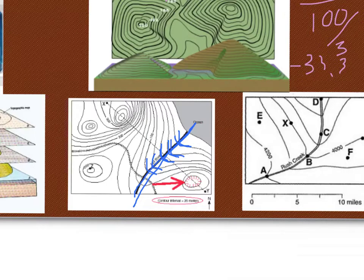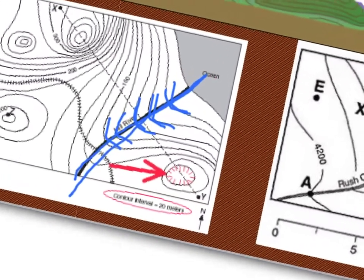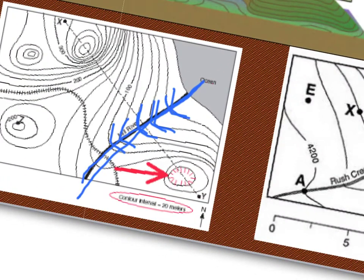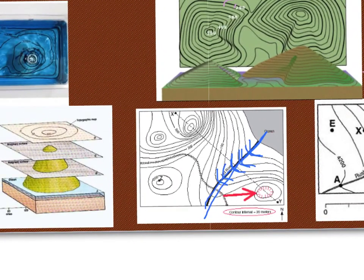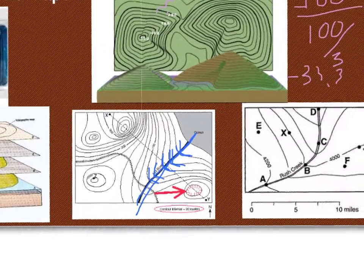Another feature on a topographic map you need to be aware of is this right here with these little hatcher lines. The circle with the hatcher lines means it's a depression or a decrease. So the little tiny circles without hatcher lines means that there's a peak. If the lines are really close together, that means that it's really steep right there. If the lines are farther apart or there's not a lot of lines, then it means it's relatively flat.